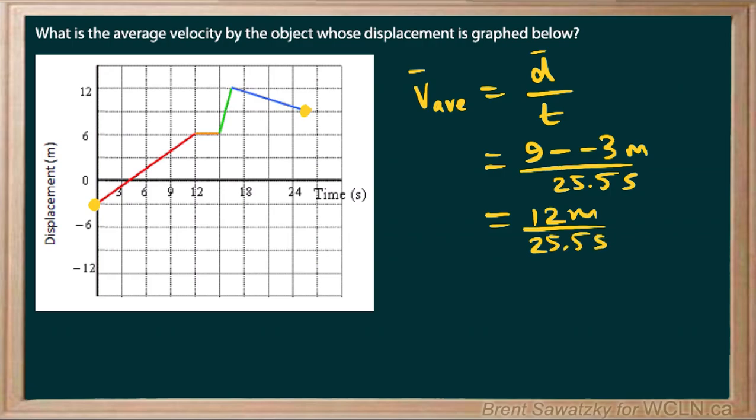12 meters over 25.5 seconds. And we can make sense of that. Let's just take a look where we ended up versus where we started. And we can see that we're going from the negative 3 all the way up to the 9 for a total of 12.